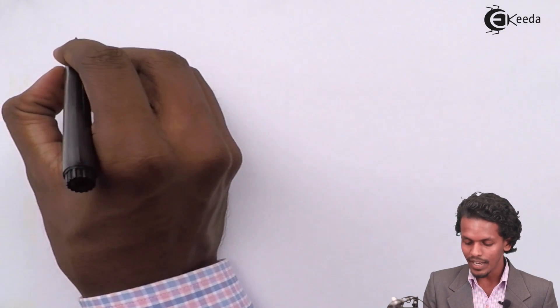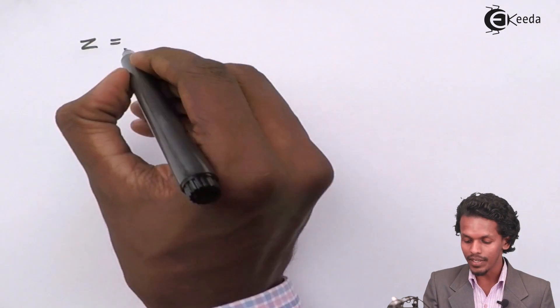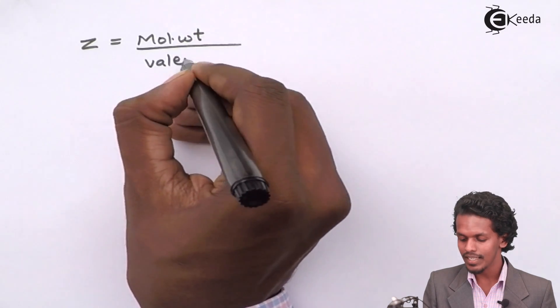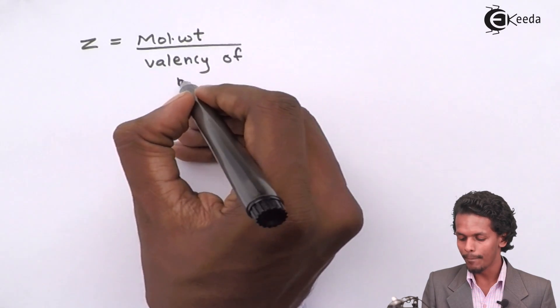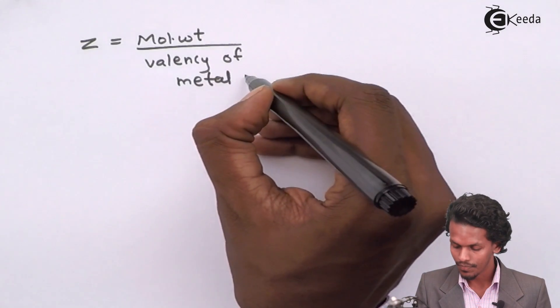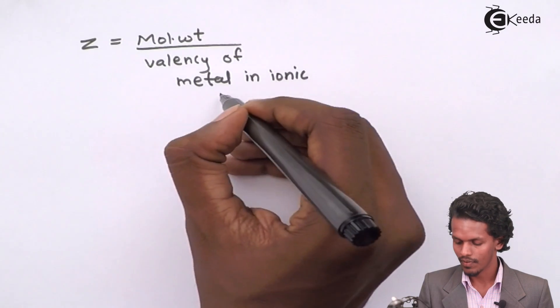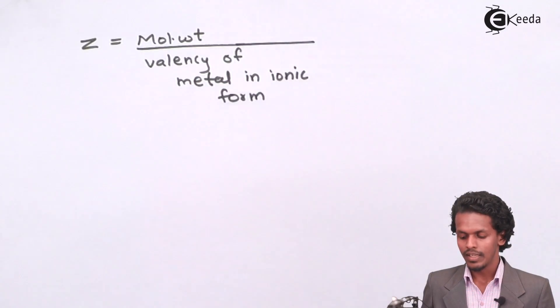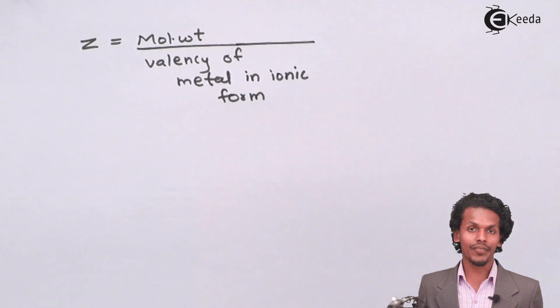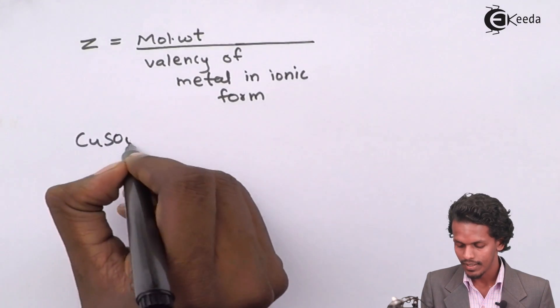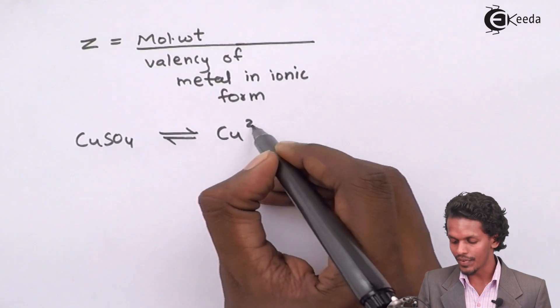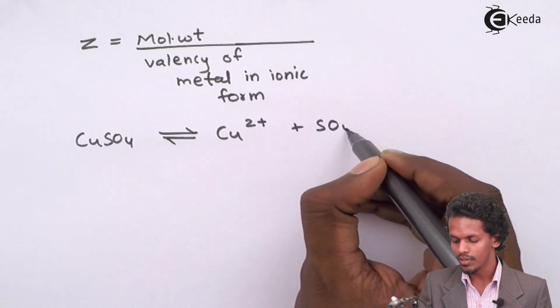Z, which means equivalent weight, is nothing but molecular weight divided by valency of the metal in ionic form. The solution provided to us is copper sulfate solution. When dissociation of copper sulfate occurs, it is converted into Cu2+ plus SO42-.